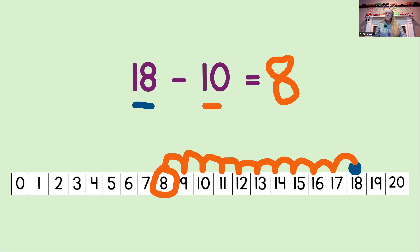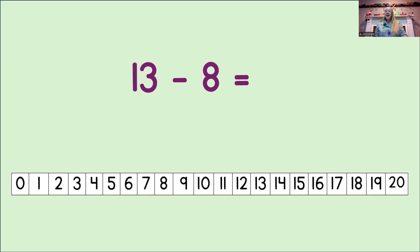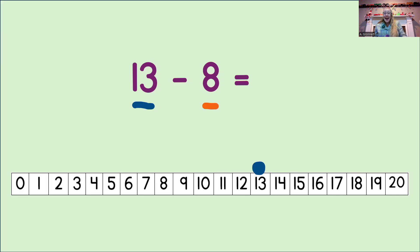You're doing a great job with this. Okay, let's try another. What do we do first? Yes, we mark the number line with the first number in the equation. That's the number 13. So, let's mark the number line. Okay, now what do we do? Yes, we look at the second number in the equation, and we count back that many to subtract from 13.